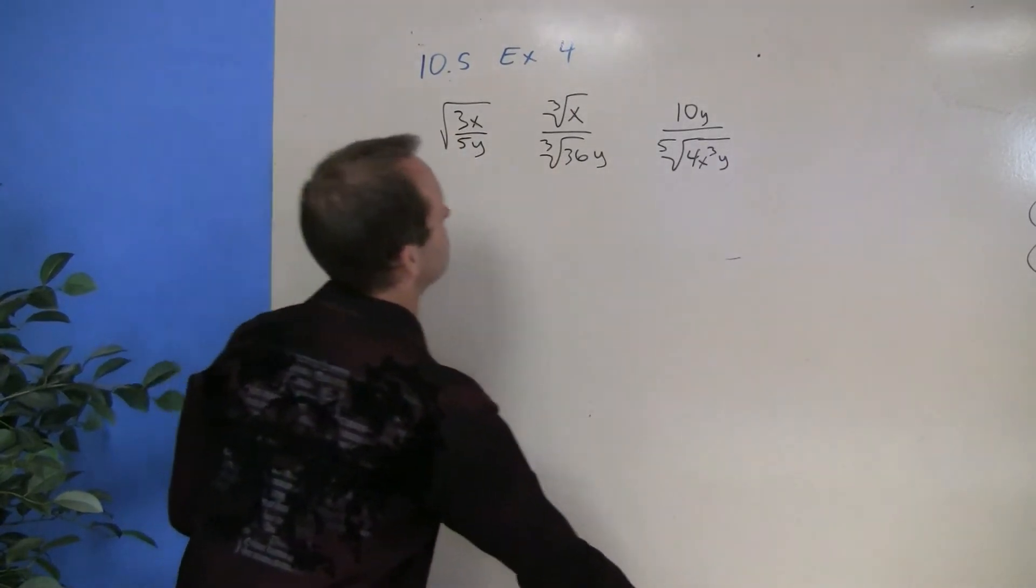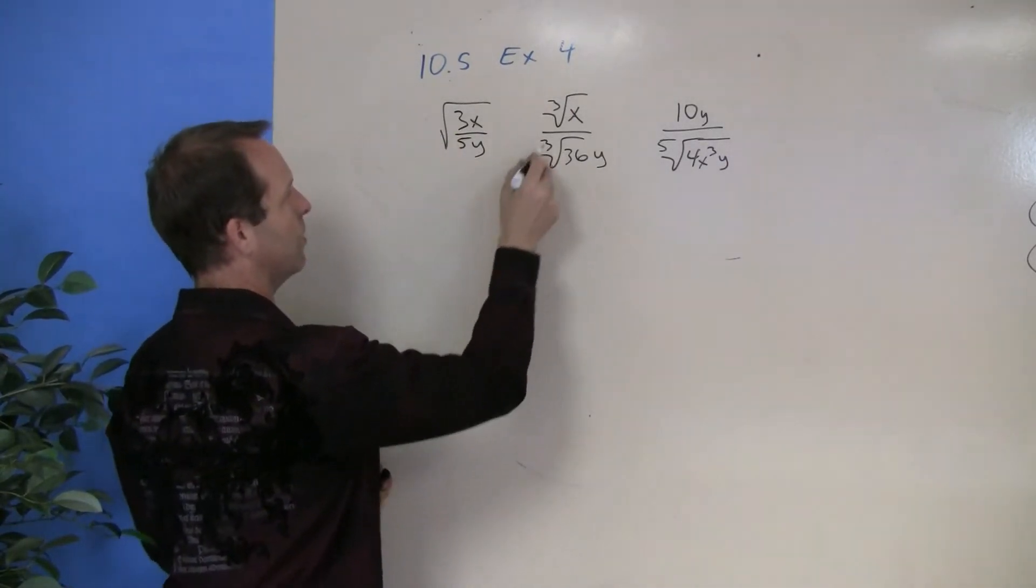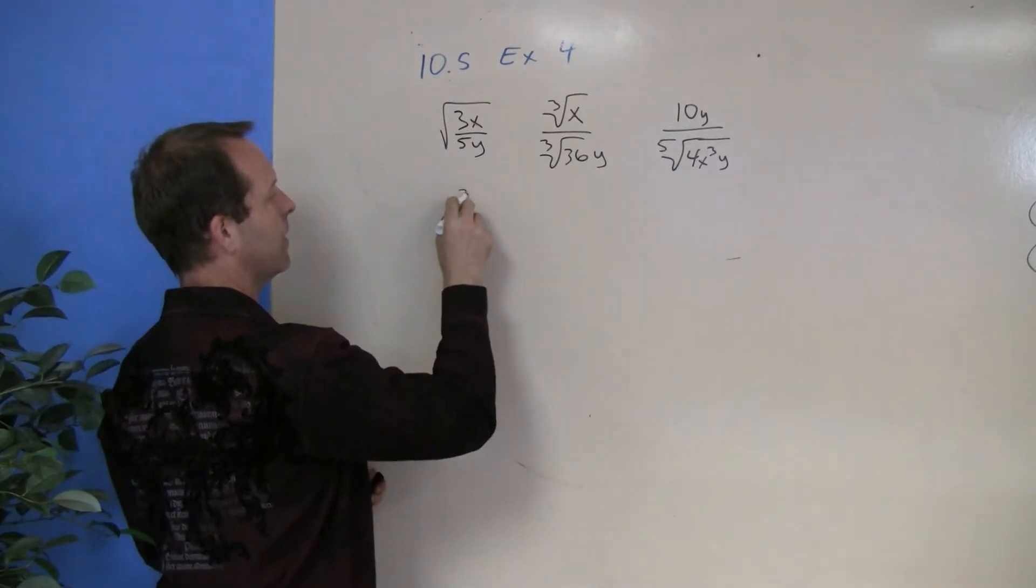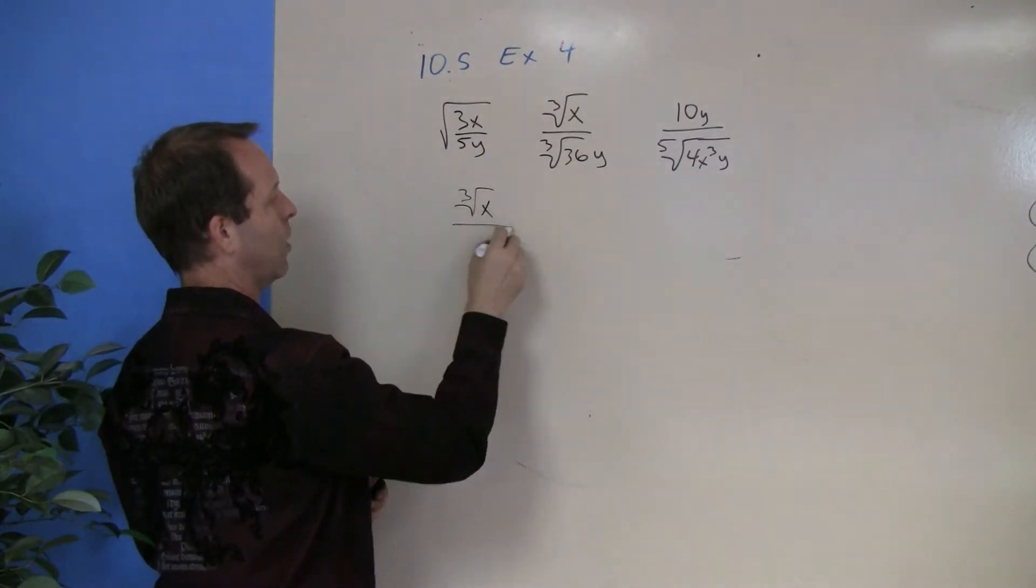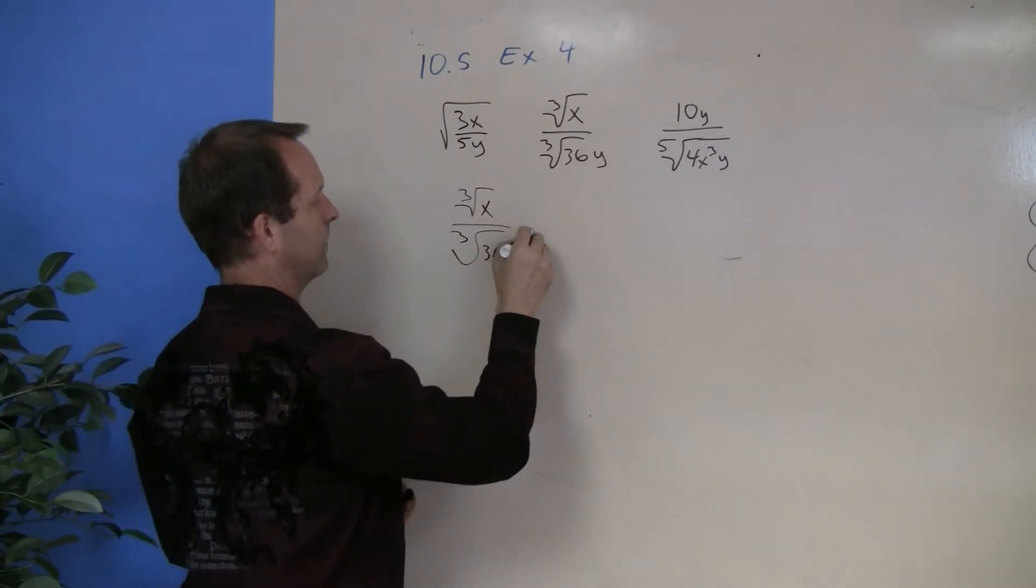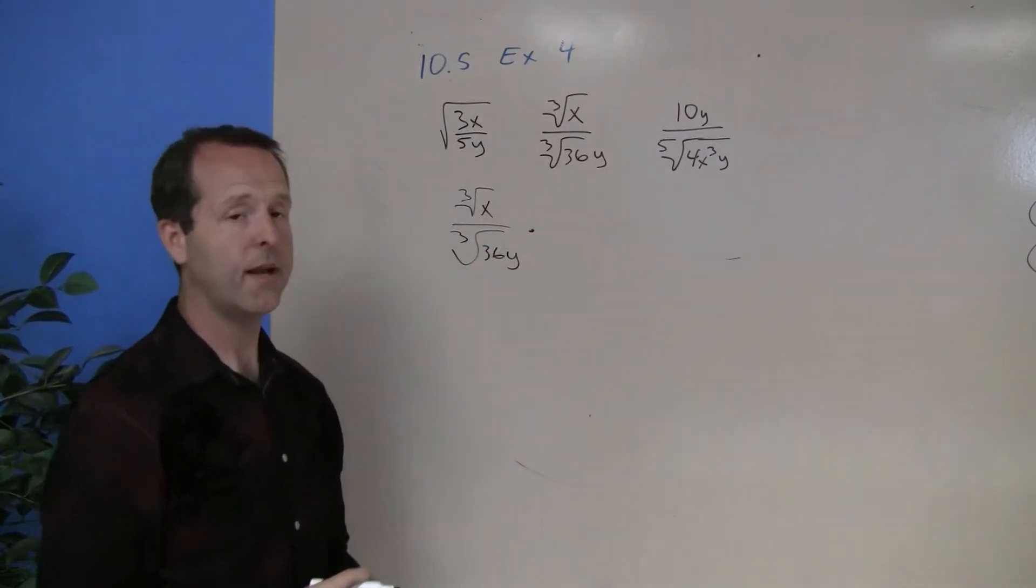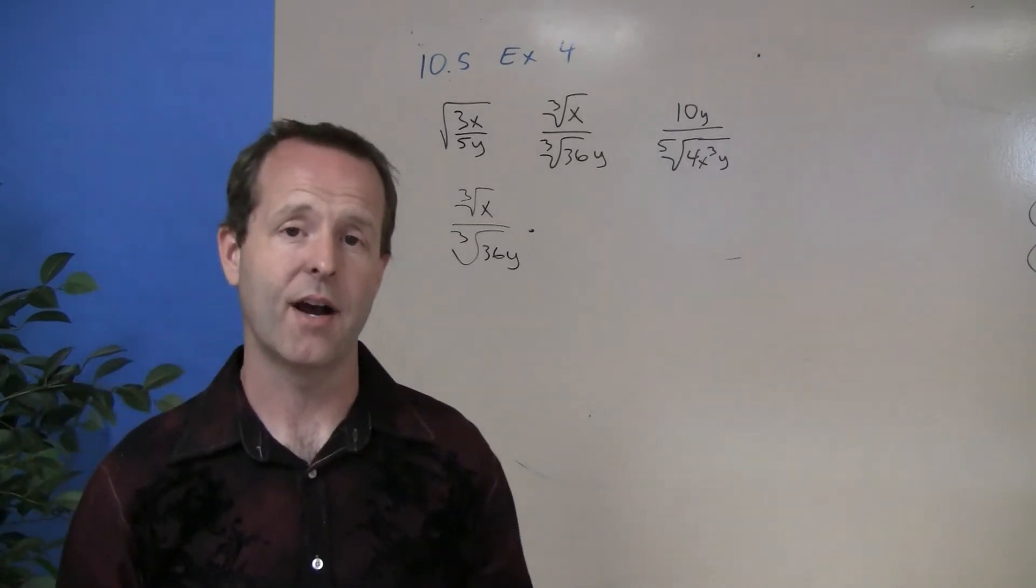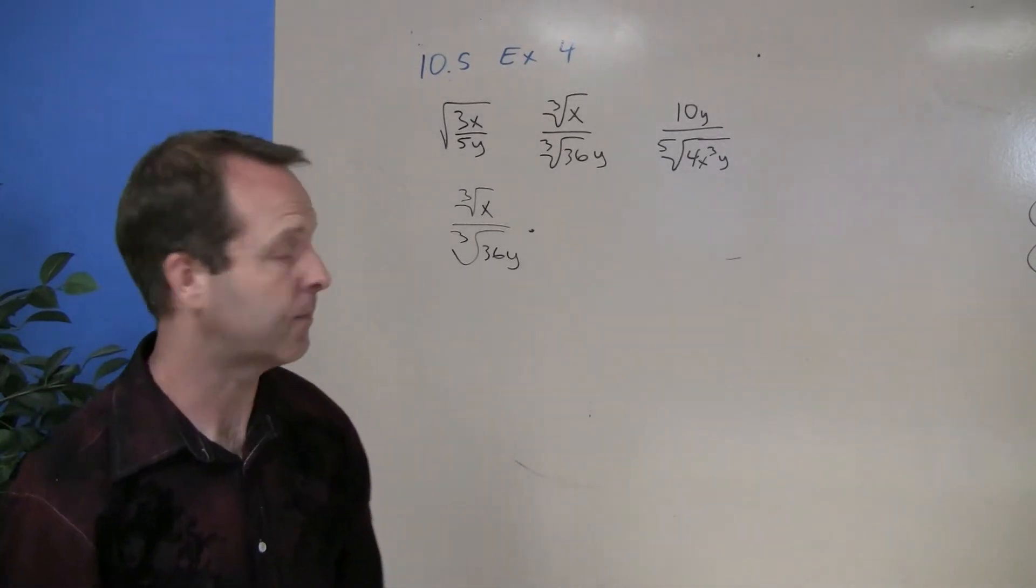We're going to look at a cube root one now. So I have the cube root, this middle term right here, the cube root of x over the cube root of 36y. Well, the denominator is not a perfect cube, so I've got to figure out what I'd multiply it by to make it a perfect cube.